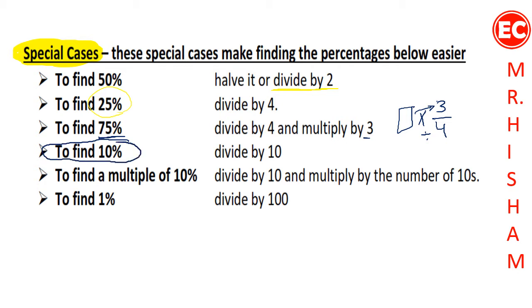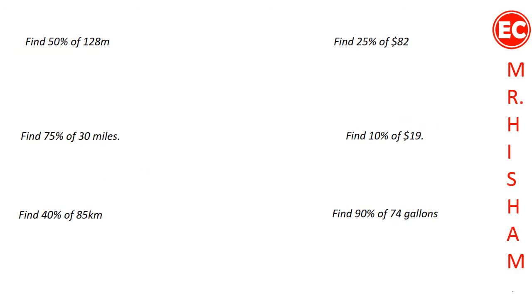The most important special case is 10% of any value: to find it, divide the number by 10, which means moving the decimal point one place to the left. For multiples of 10 — for example 40%, 50%, or 60% — divide by 10 first, then multiply by the tens value. To find 1% of any value, simply divide by 100. We'll check these with examples on the next slide.